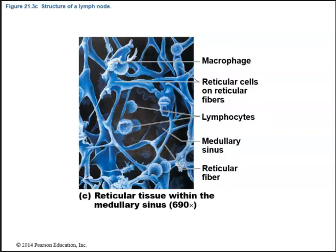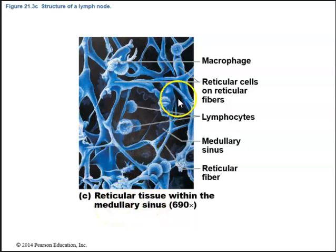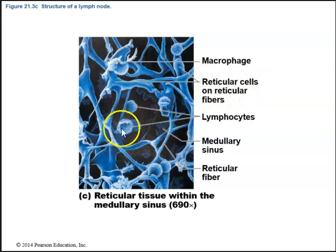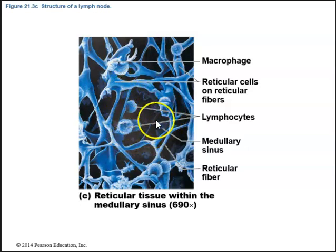We have reticular connective tissue located within lymph nodes and lymph organs such as the spleen. We can see cords of reticular tissue within the medullary sinus — reticular cells on reticular fibers — and then lymphocytes scattered throughout the medulla, specifically throughout the reticular fibers.